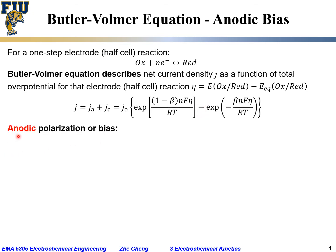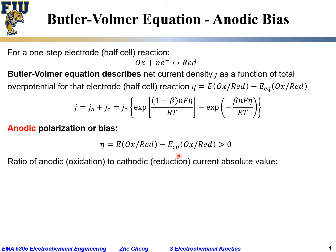Under anodic or oxidation polarization, by the sign convention, η is positive — meaning the actual potential for the half-cell reaction is more positive than the equilibrium potential. Under this condition, let's examine the ratio between the anodic (oxidation) and cathodic (reduction) current densities in absolute value.